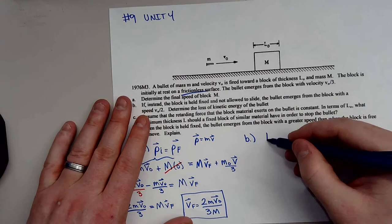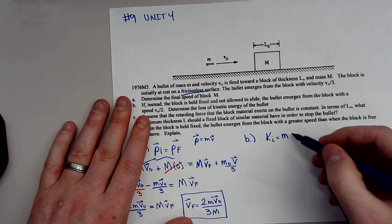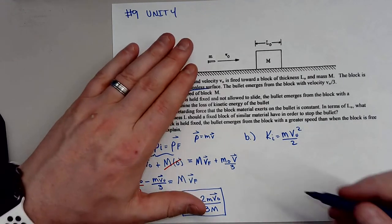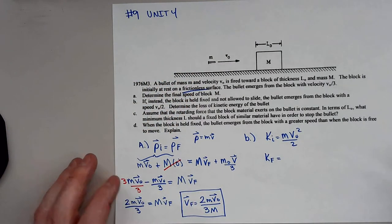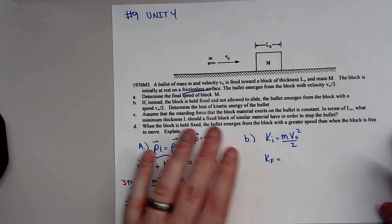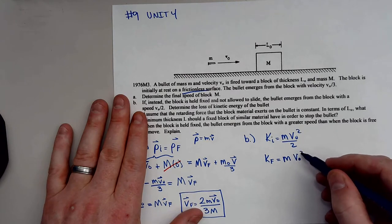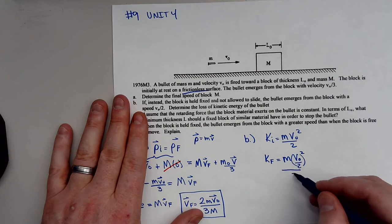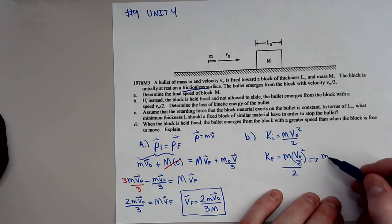We know the kinetic energy initial was equal to the mass of the bullet little m times V naught squared all over two — that's how much we had initially. Afterwards, the kinetic energy final: the bullet is now moving at V naught over two, so KE final equals little m times (V naught over two) squared over two, which gives m·V naught squared divided by four, then divided again by two.